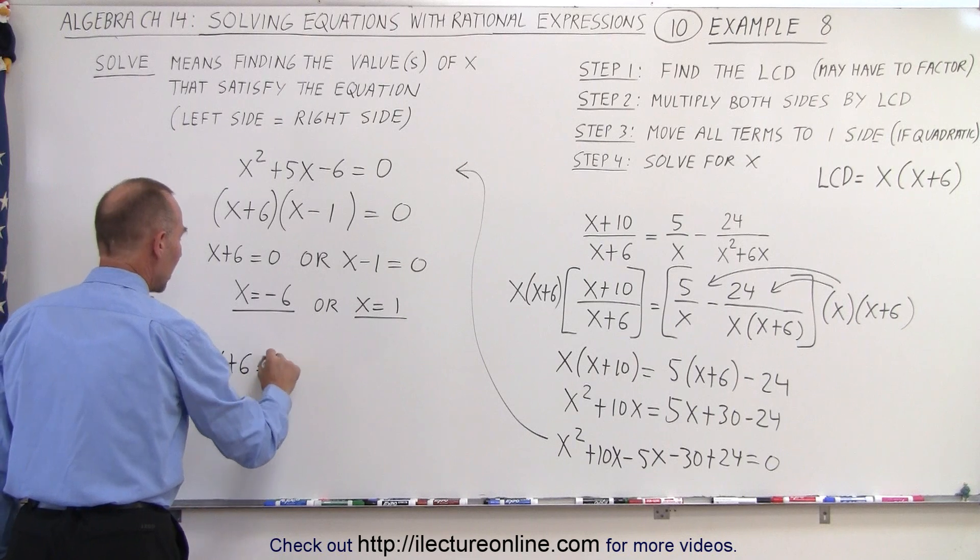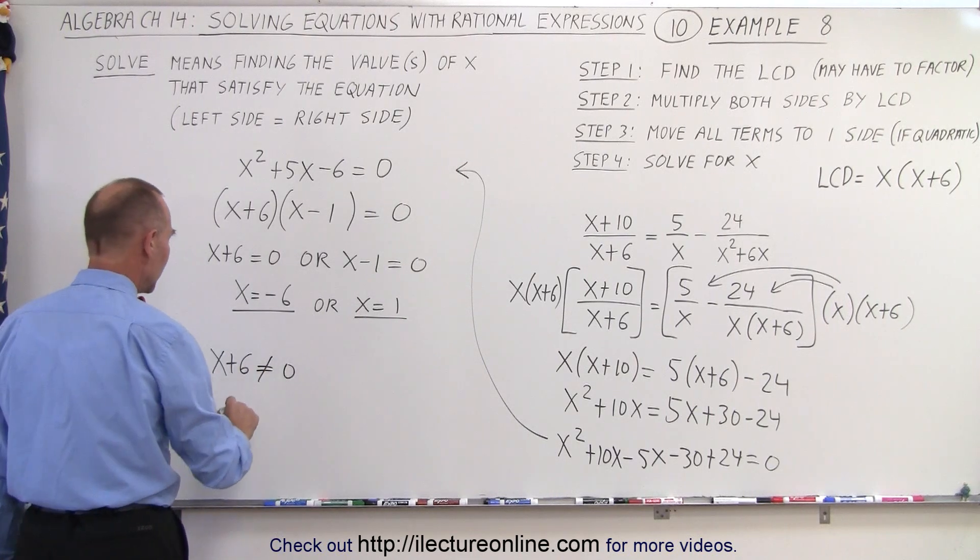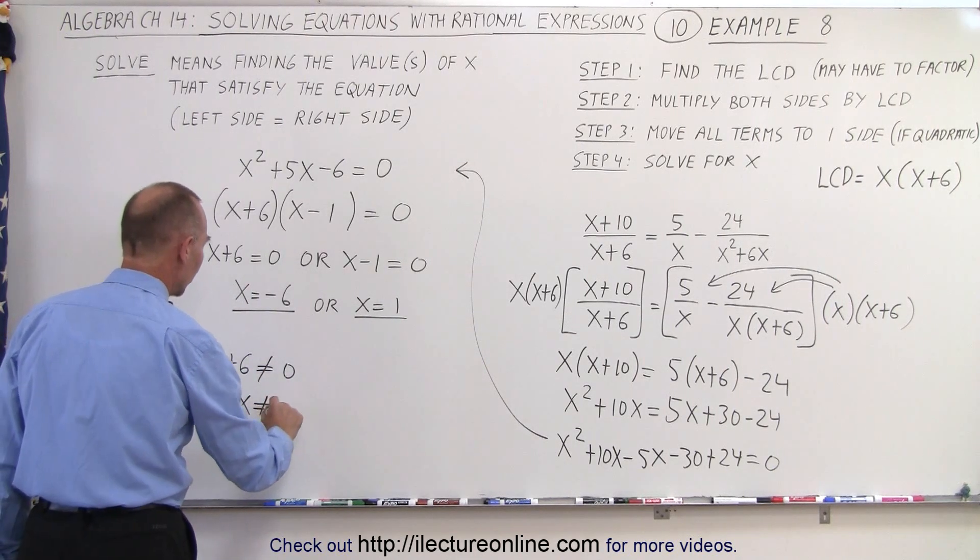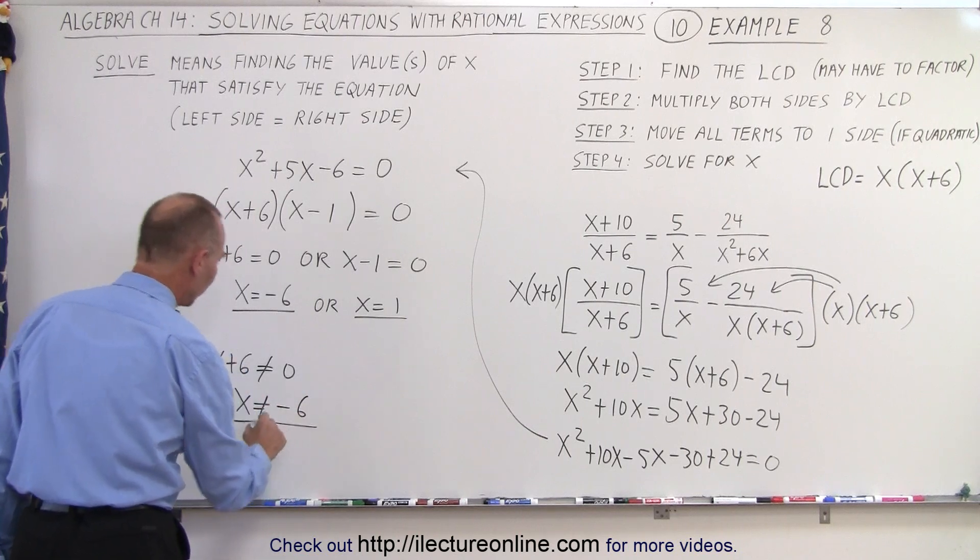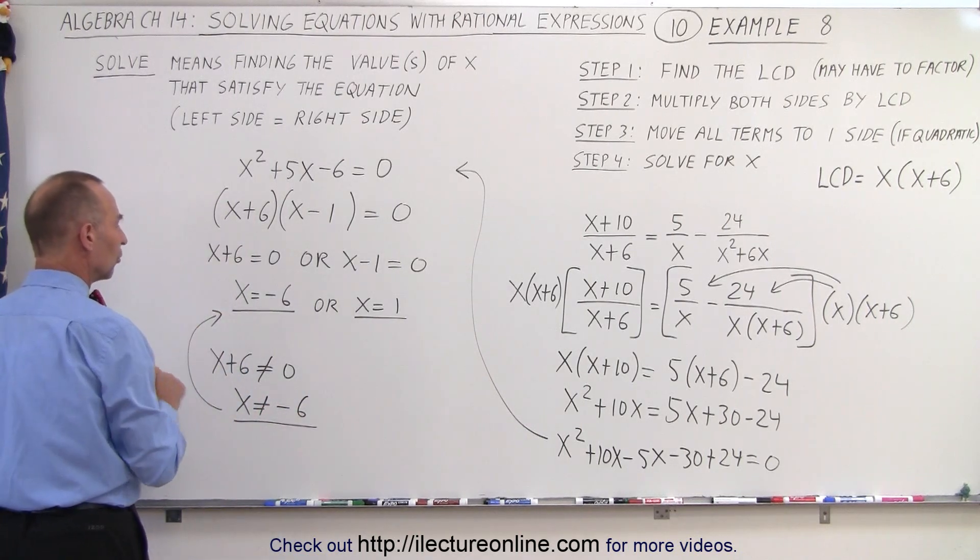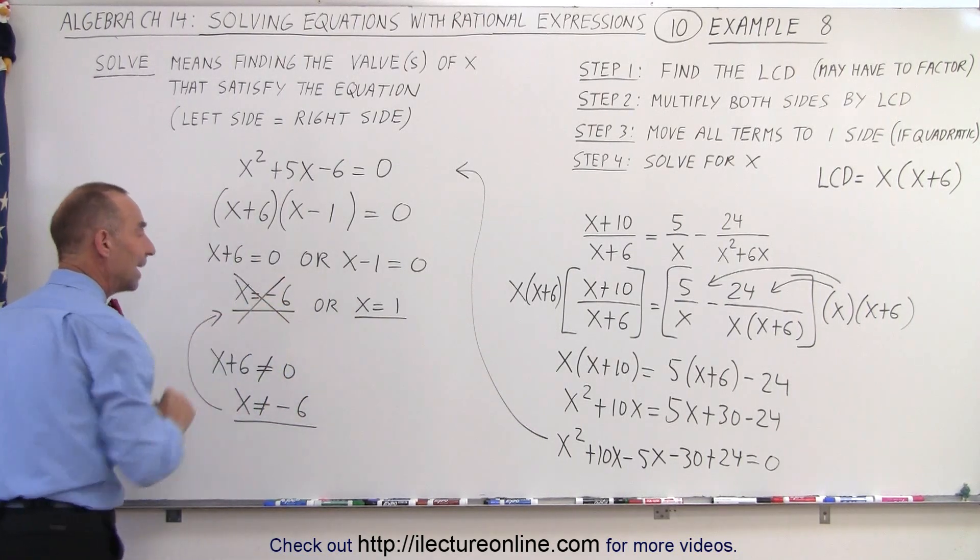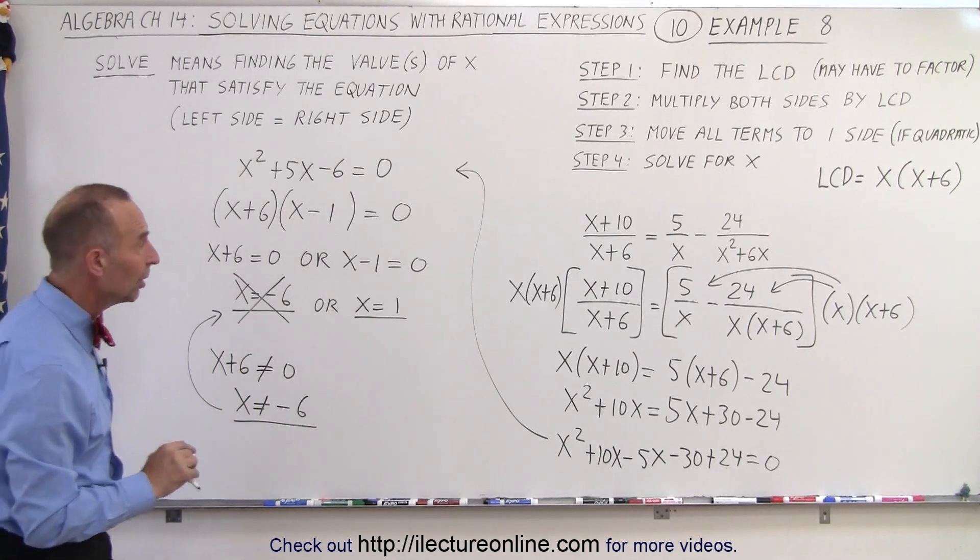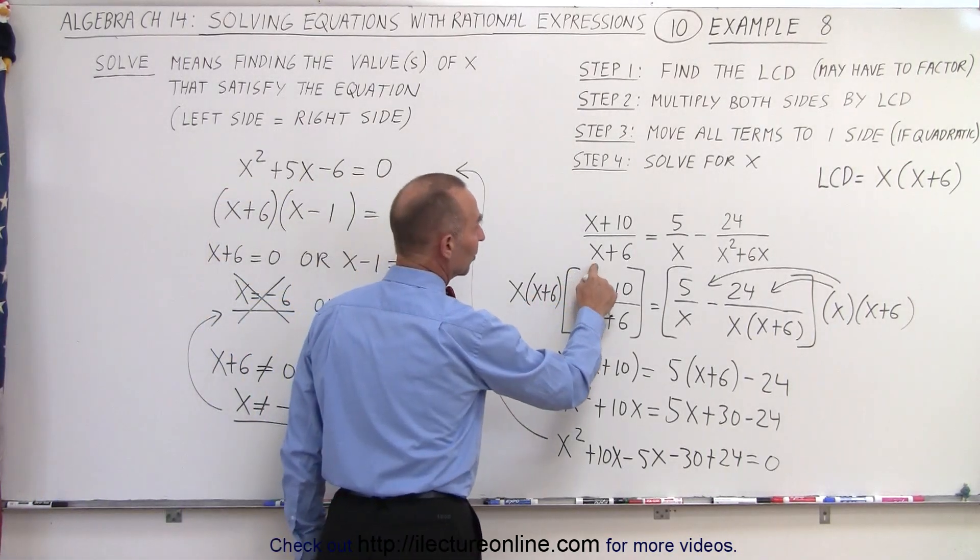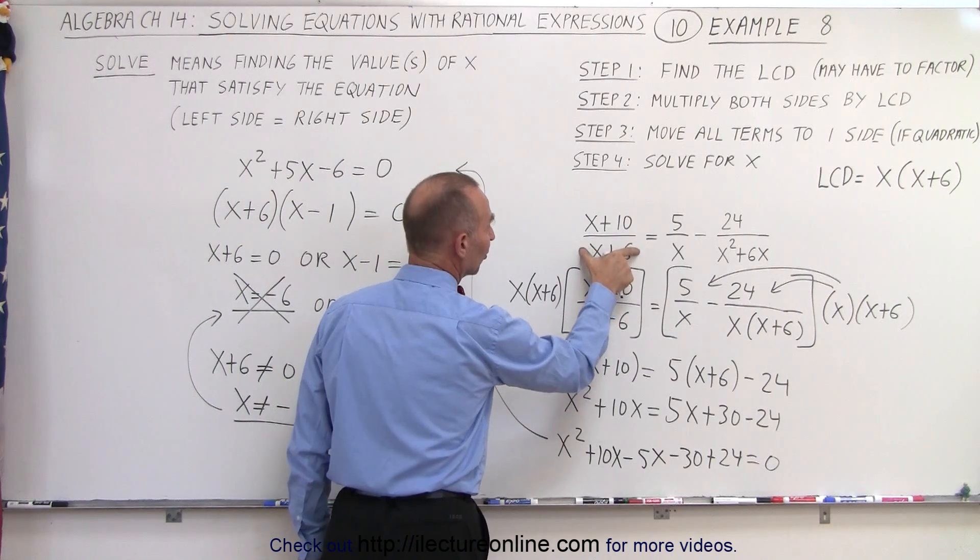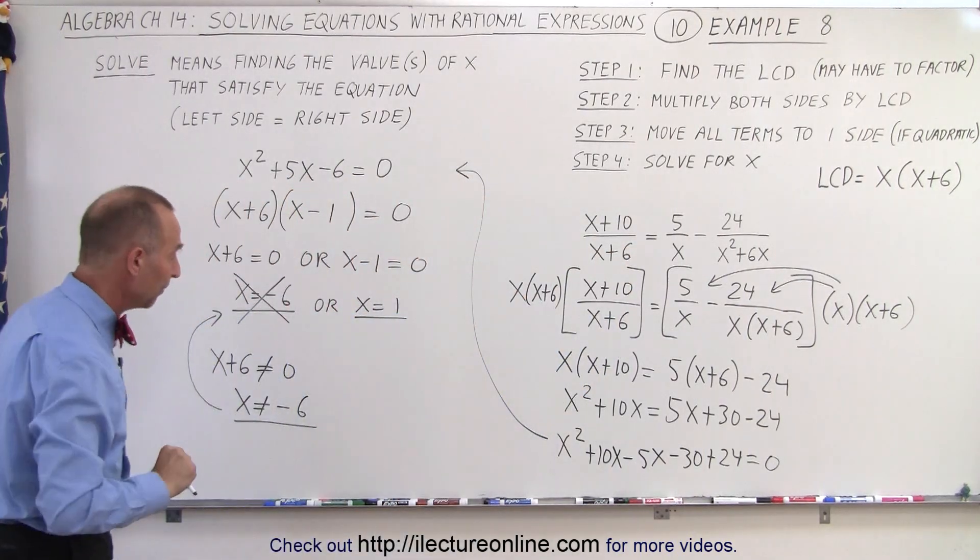Which means that x should not equal -6, and that happens to be one of our solutions. So therefore this is not an acceptable value, because when I plug a -6 in here, -6 + 6 gives me zero in the denominator, and of course we can't have that.